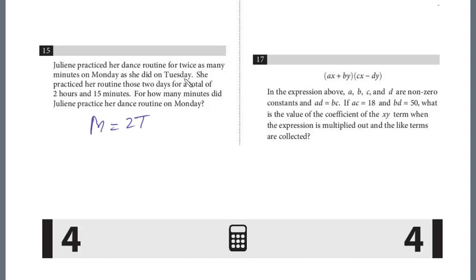So Monday equals two times Tuesday. And she practiced her routine total on both days for two hours and 15 minutes. And we're solving this in minutes, so I'm going to convert this to 120. So we know that M plus T both days is 135.